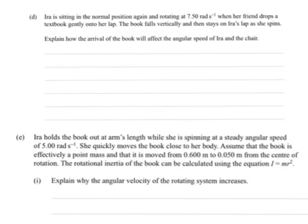The angular kinetic energy will be less, which will decrease the speed of Ira and the chair and increase the speed of the book, so they're all at the same speed. That's one way to look at it. The cause of that is friction.